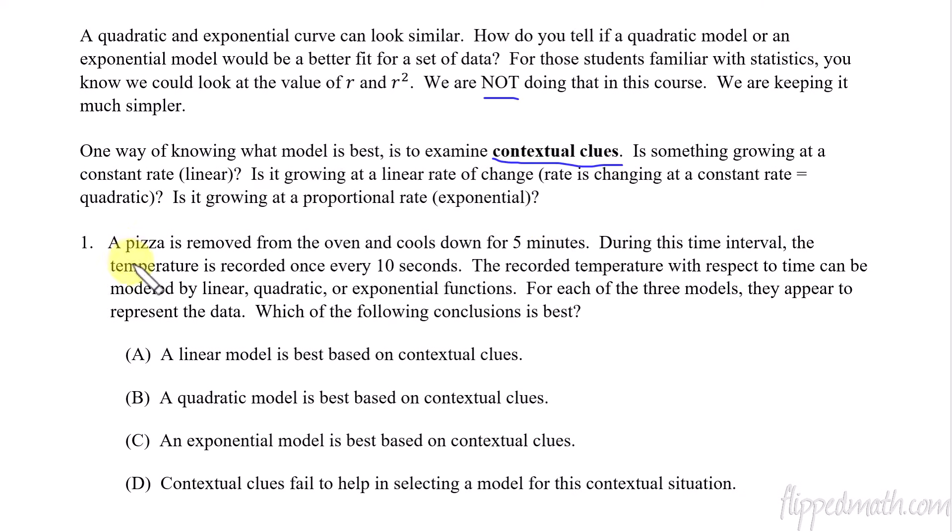So the idea is trying to figure out just from the scenario can we tell. So for example, here's a pizza. It's coming out of the oven. It's hot. It's going to cool down for a while. We take some measurements and so forth every 10 seconds. The recorded temperature with respect to time can be modeled by either a linear quadratic or exponential function. In other words, all three of them kind of give us a decent idea for this thing.